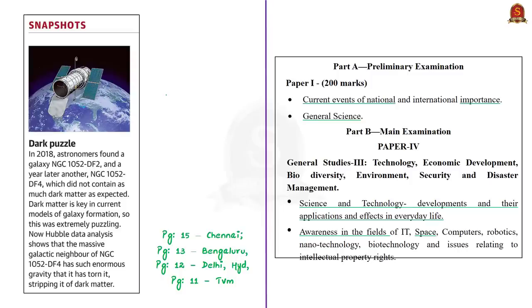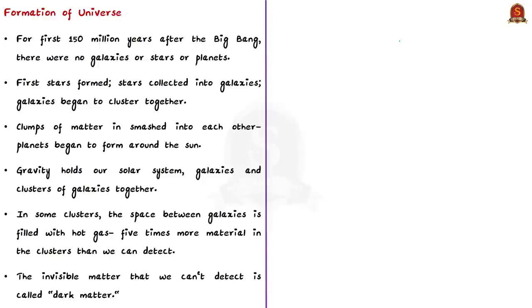This news article says that astronomers have discovered a galaxy NGC 1052DF2 in 2018 and another one NGC 1052DF4 in 2019. The article says that the second one did not contain as much dark matter as expected. In this context, let us discuss in detail about dark matter and dark energy. For the first 150 million years after the Big Bang, there were no galaxies or stars or planets, the universe was featureless. As time passed, the first stars formed, stars collected into galaxies, then galaxies began to cluster together forming groups. There should be something to hold our solar system, galaxies and cluster of galaxies together, and this glue is nothing but gravity.